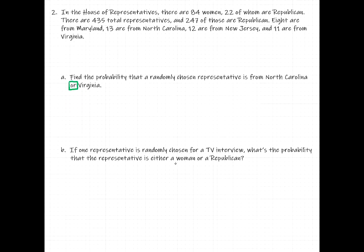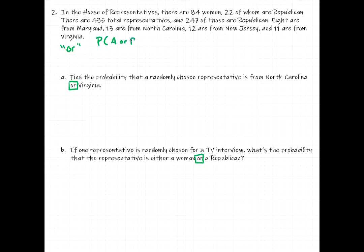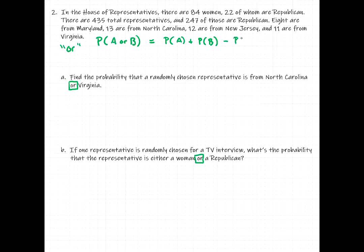We have a rule for 'or' — the addition rule for probability. When we have the word 'or', the probability of A or B happening — meaning either A could happen, or B can happen, or A and B could both happen — is equal to the probability of A plus the probability of B. But in some cases there's overlap, so we don't want to double count things that are part of group A and also part of group B.